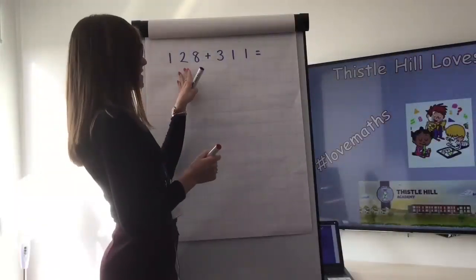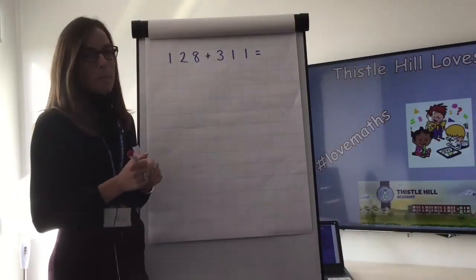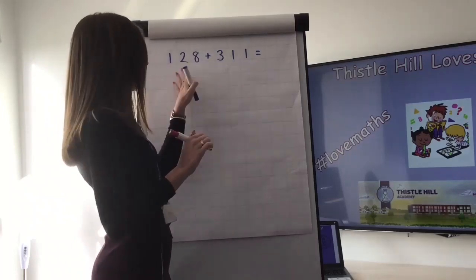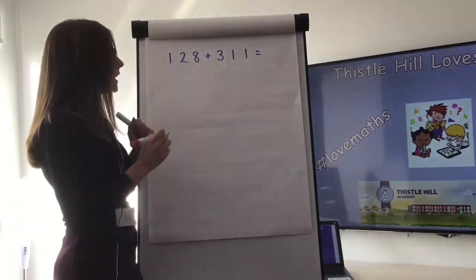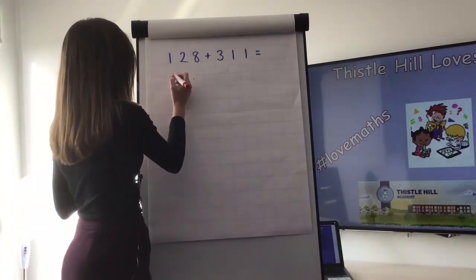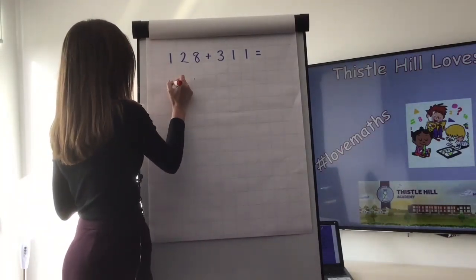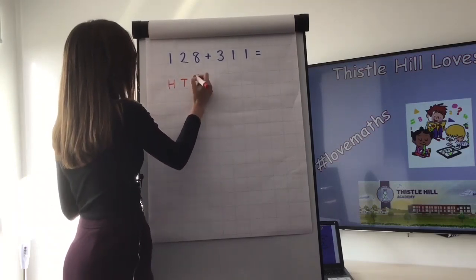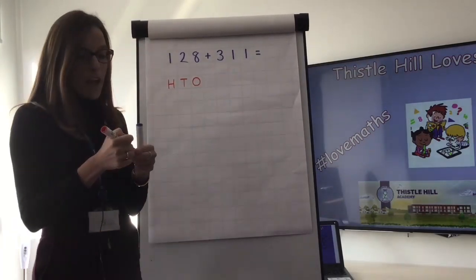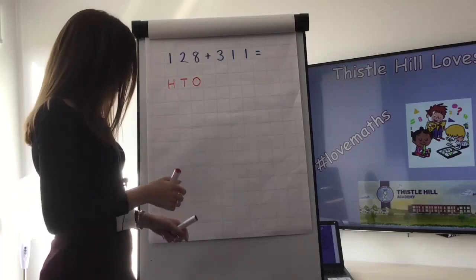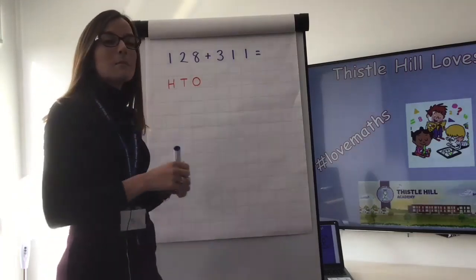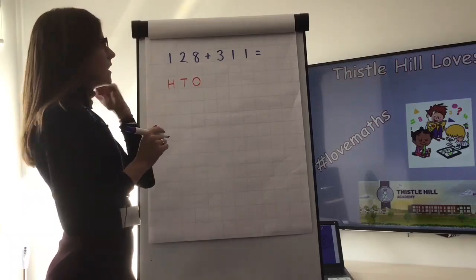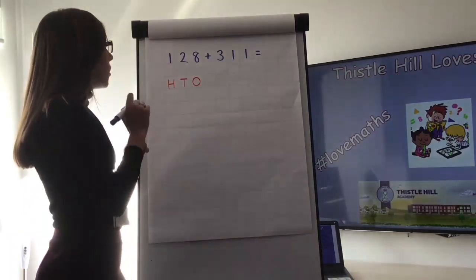Today we're going to be looking at adding three-digit numbers. Because we're working with three-digit numbers, we're going to need our hundreds, tens, and ones. When we add three-digit numbers, we like to do it with the expanded column method.